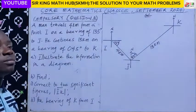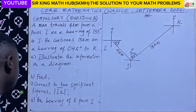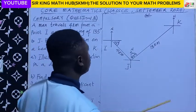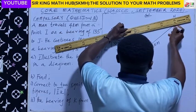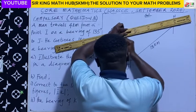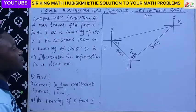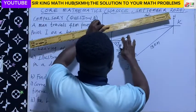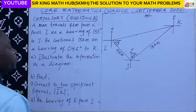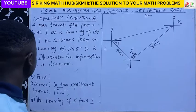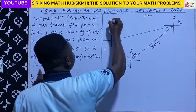Now what shape are we getting? We are getting something like a triangle. To get the triangle, we need to join point I and K. So we now have our triangle. Part A said we should illustrate the information on the diagram, so that is what we have done. That is the A part.